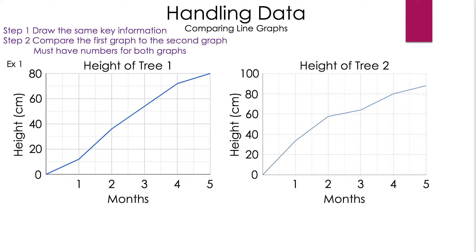Take a look at the graphs. On the left you have height of tree 1, and on the right you have height of tree 2. So what are we doing here? We're comparing the two charts. Compare means the same items. How do you do it?